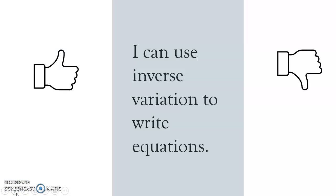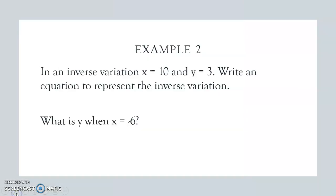At this point, I hope you can use inverse variation to write an equation by looking at that constant of variation. Here's an example. You can try this one if you want, but I'll also walk through it. In an inverse variation, x equals 10 and y equals 3. Write an equation to represent the inverse variation. Remember, x times y equals k. So for us, 10 times 3 equals 30. That means x times y equals 30, and my equation is going to be y equals 30 divided by x. If I put negative 6 in for x, I get y equals 30 divided by negative 6, so y would equal negative 5. Here's my equation for the inverse variation, and here is the value of y when x equals negative 6.